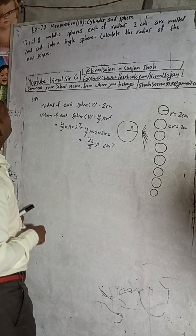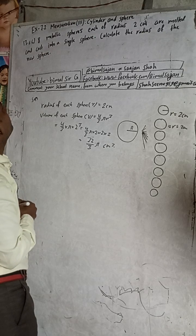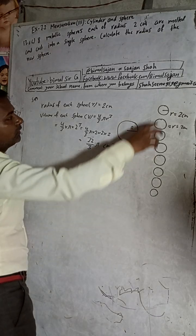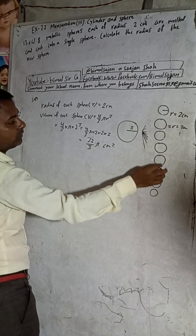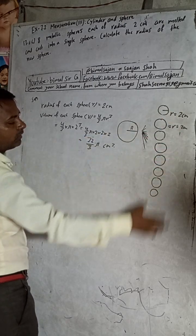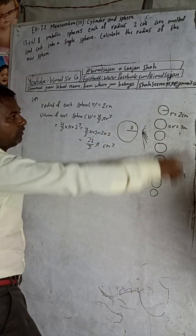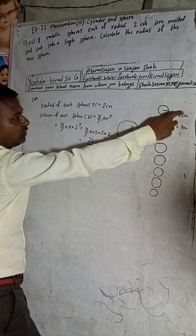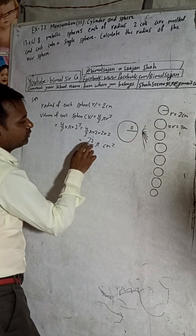Now, 8 metallic spheres — each of these spheres are melted. These 8 metallic spheres all have the same radius, so all volumes are the same.